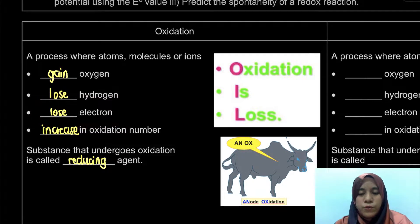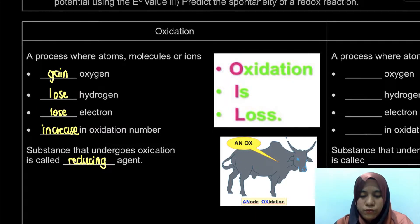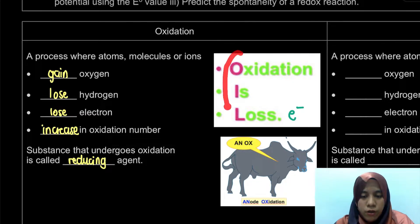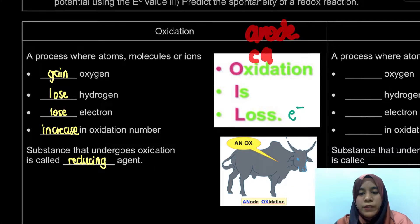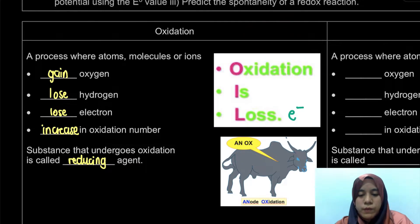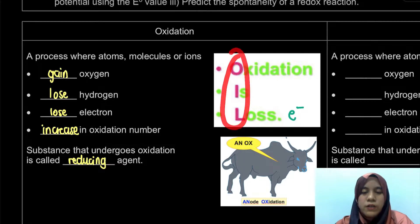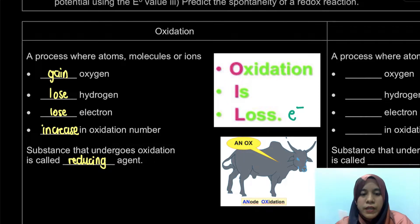The key definition we will use in chapter 3 is the losing of electrons. Here is an acronym to help you remember: OIL — Oxidation Is Losing electron. For electrochemistry, oxidation occurs at the anode. To memorize this, remember ANOX: AN stands for anode, OX stands for oxidation. So oxidation is losing electrons, and it occurs at the anode.